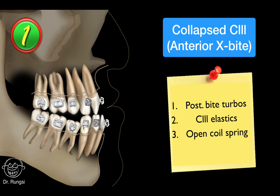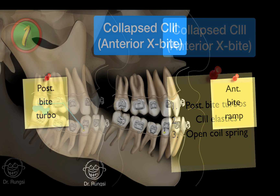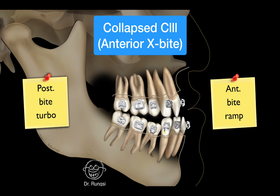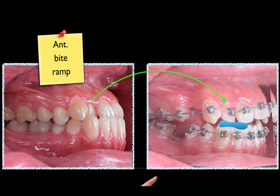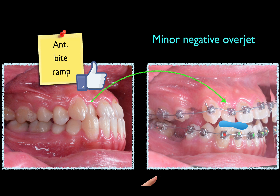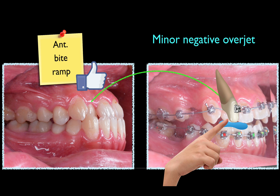Firstly, the three keys to correct Class 3 malocclusion were posterior bite intervals, Class 3 elastics, and an open coil spring. Usually, to correct anterior crossbite, we have two options: a posterior bite interval or an anterior bite ramp. Anterior bite ramp is more efficient in cases of minor negative overjet because it can procline the upper anterior teeth directly.